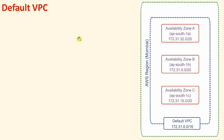Now when we talk about an AWS region like Mumbai, it has got three availability zones: APSouth-1A, APSouth-1B, and APSouth-1C. By default, the default VPC address range is 172.31.0.0/16. That means whenever we are going to create any instance in the Mumbai region, it will be given an address from this range.